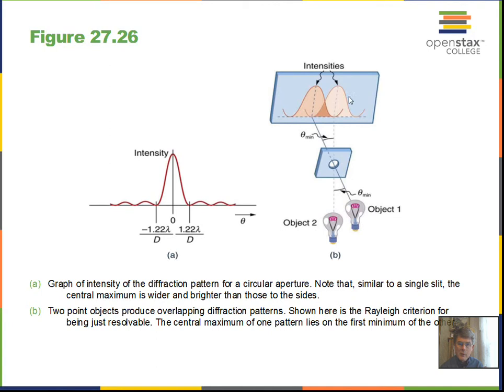Here we have two light bulbs, each creating a central maximum. These light bulbs would be detected as separate objects because their central maxima are far enough apart. 'Far enough' means it satisfies the Rayleigh criterion: the central maximum of one object is located at the first minimum of the other object's diffraction pattern. When this is the case, we can resolve the image and see the separate objects.